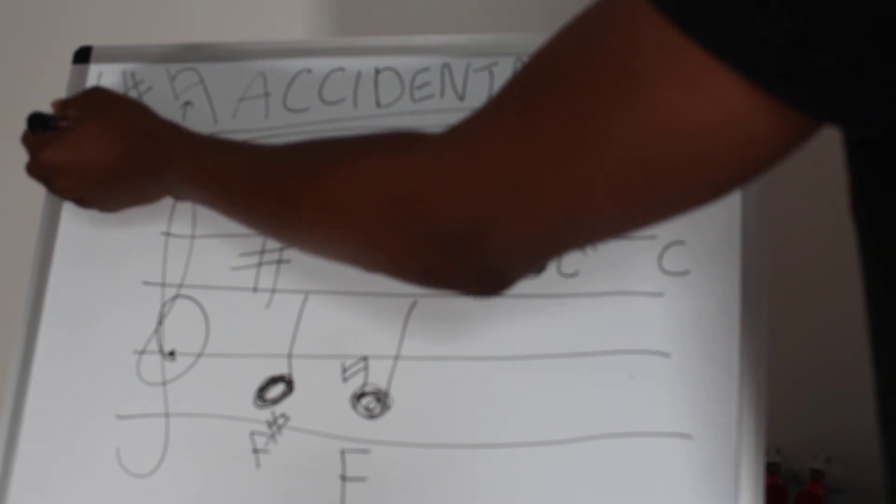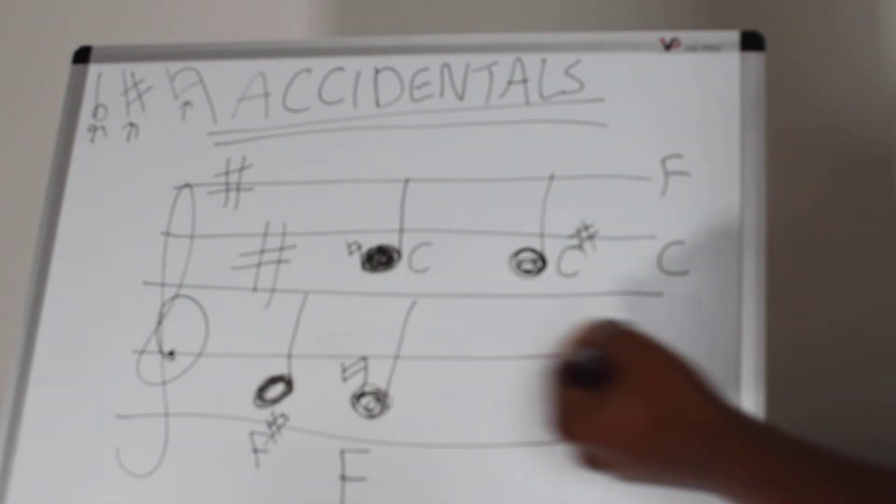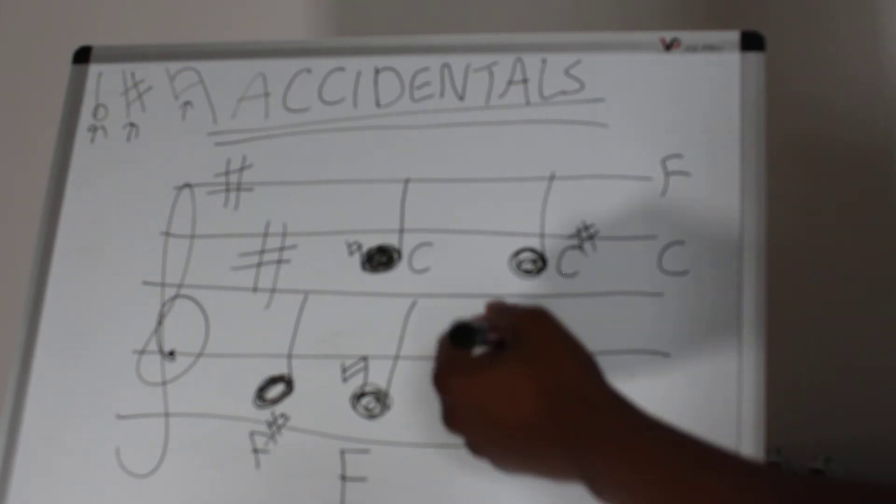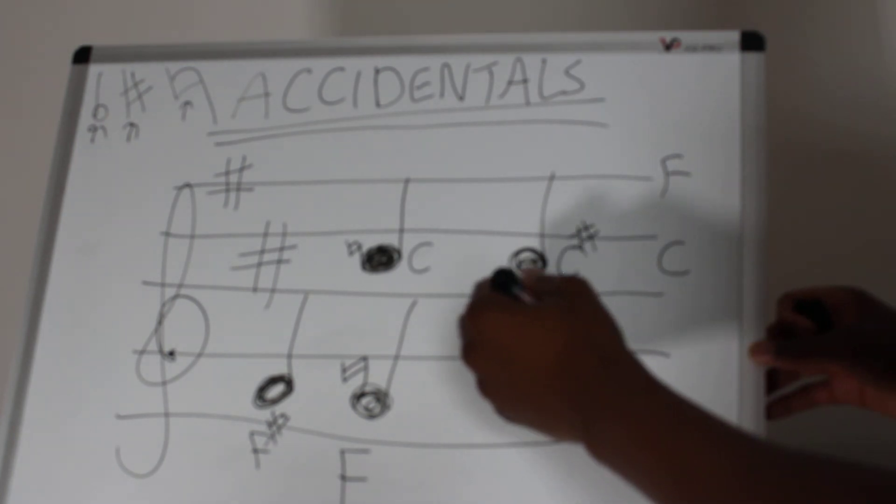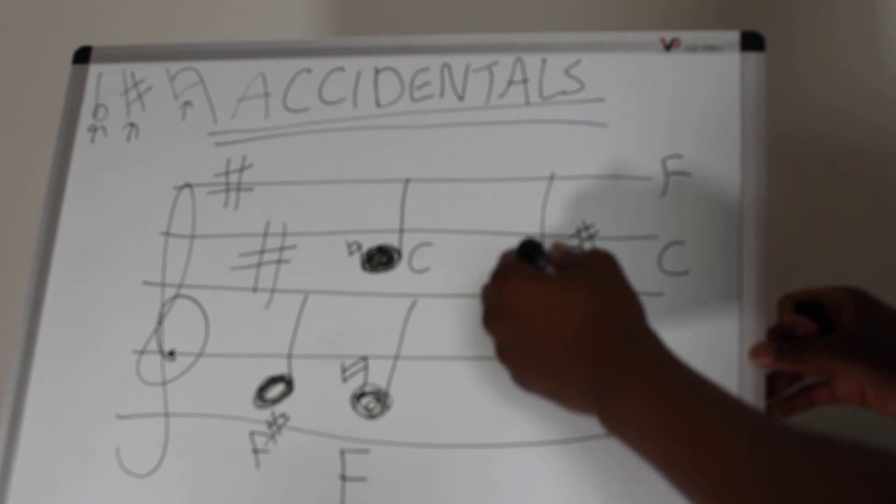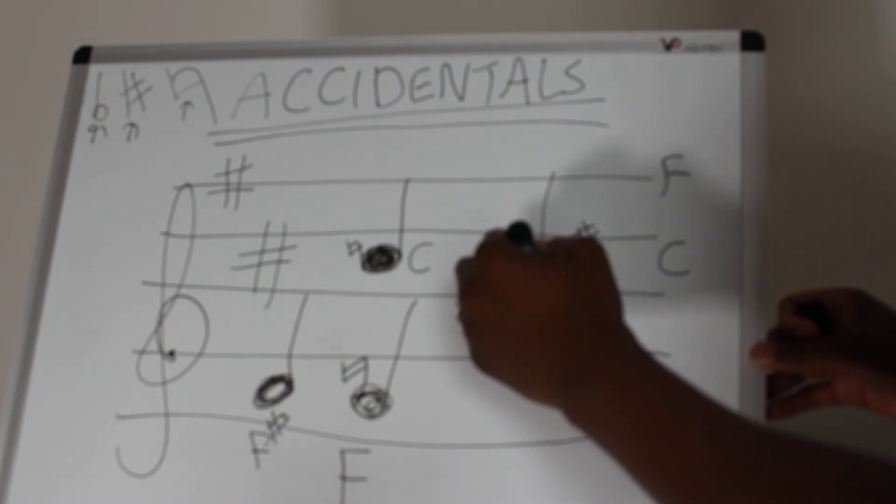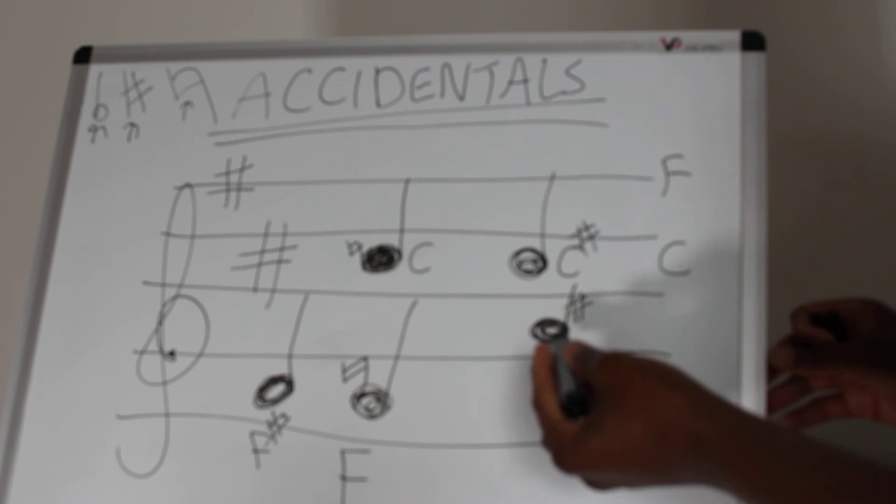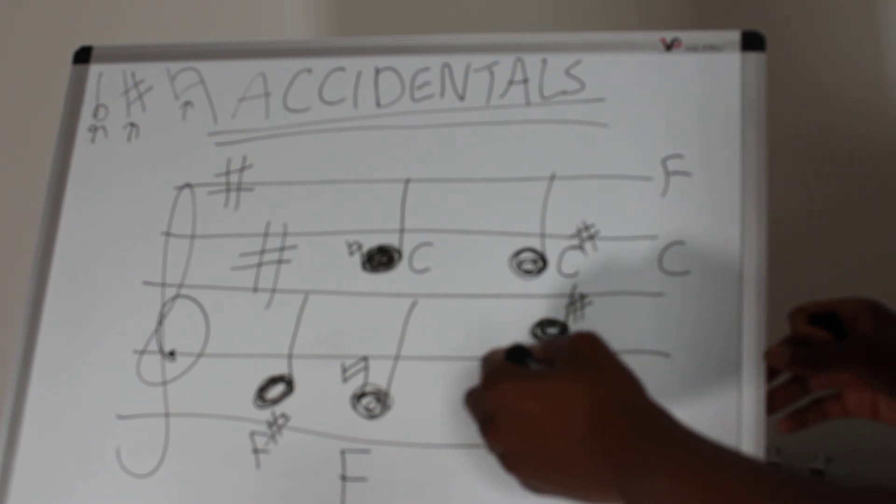My A's are normal A's. If I wanted to add an A sharp, I would write my A note and add a sharp sign to my A note, so that becomes an A sharp.